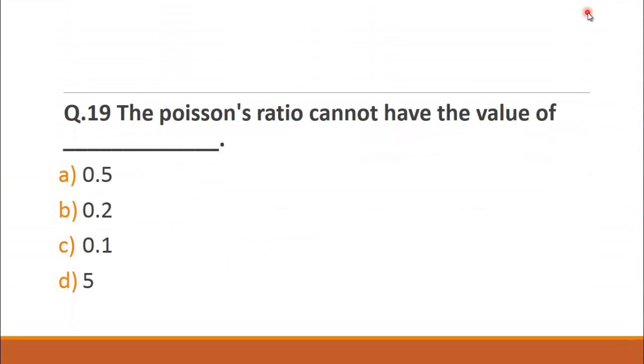MCQ number 19 is: The Poisson ratio cannot have the value of? A. 0.5, B. 0.2, C. 0.1 and D. 5. We know that the value of Poisson ratio is in the range of minus 0.5 to plus 1. So you can see that 5 is out of range, so the right choice for this question is D. 5.